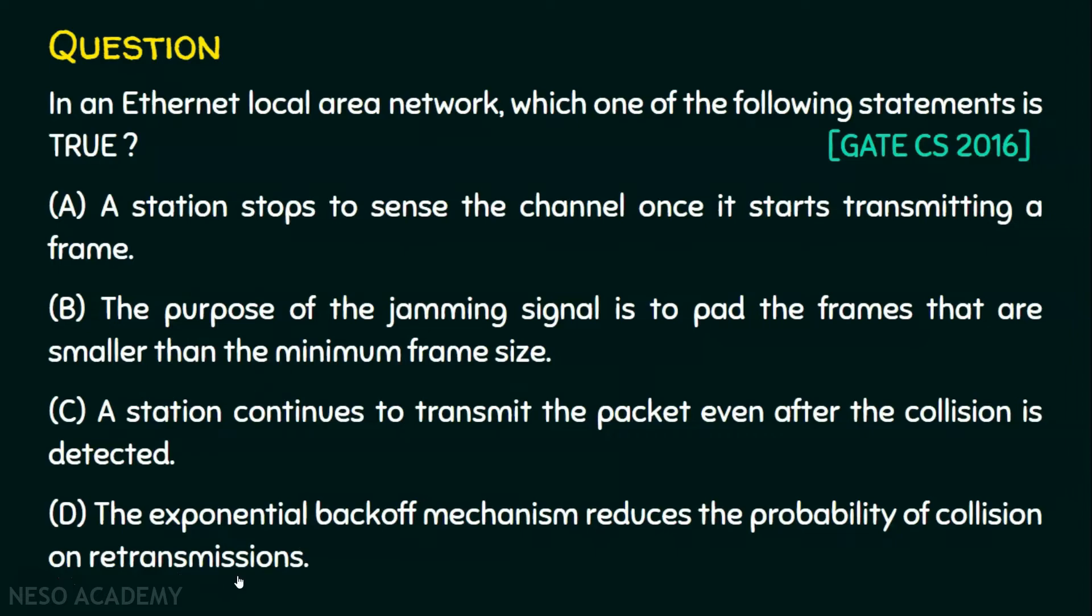Let's take option A. A station stops to sense the channel once it starts transmitting a frame. Option A is false. Why? Because any station will not stop sensing the channel once it starts transmitting a frame. The job of Ethernet transmitter algorithm itself is sensing the channel always in order to send the data.